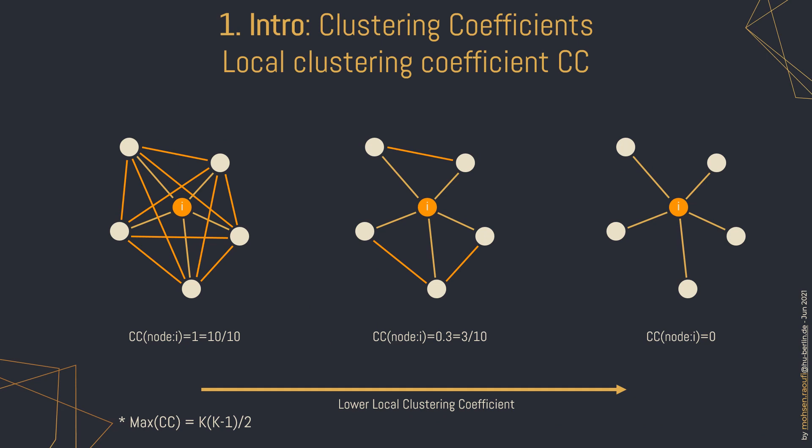The next term is clustering coefficient, abbreviated as CC. CC is the ratio of connections between a node's neighbors and the maximum number of connections they can have. It is good to know that a large CC value for a node means it is directly friends with the friends of its friends. We will later see that if a node introduces its neighbors to each other, its clustering coefficient will increase.